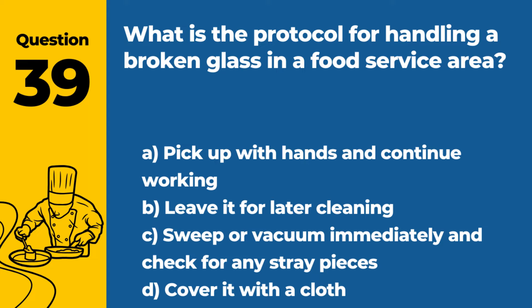Question 39. What is the protocol for handling a broken glass in a food service area? a. Pick up with hands and continue working. b. Leave it for later cleaning. c. Sweep or vacuum immediately and check for any stray pieces. d. Cover it with a cloth. Answer c. Sweep or vacuum immediately and check for any stray pieces. In case of a broken glass, it should be swept or vacuumed immediately, and the area should be checked thoroughly for any stray pieces to prevent injury and contamination.